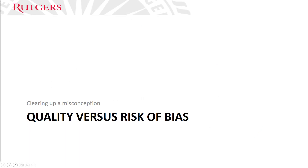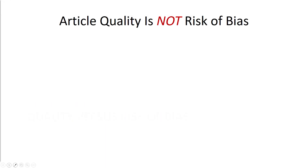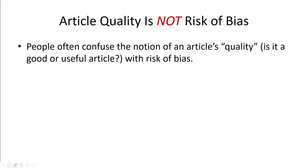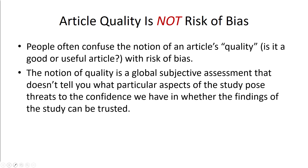The first thing I want to do is clear up a potential misconception: quality versus risk of bias. Article quality is not the same as risk of bias. People often confuse the notion of an article's quality — is it a good or useful article — with risk of bias. The notion of quality is a global, subjective assessment that doesn't tell you what particular aspects of the study pose threats to the confidence we can have in the findings.